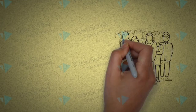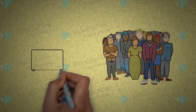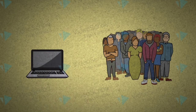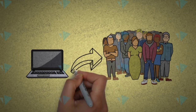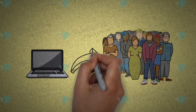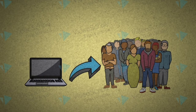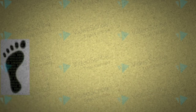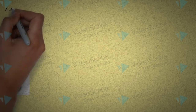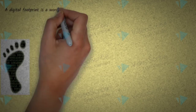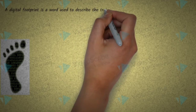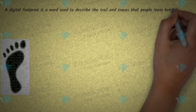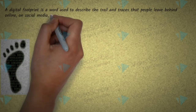Hello everyone, welcome to this video in which we are going to discuss the last unit: Societal Impact for Class 12 IP. We are going to discuss what are the impacts of technology over our society. The first topic is digital footprint. Just as a footprint is the impression of our foot, digital footprint refers to the traces we leave behind after performing any online activity.